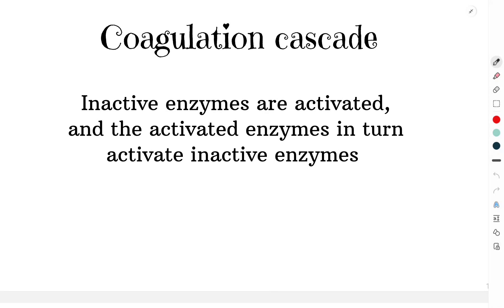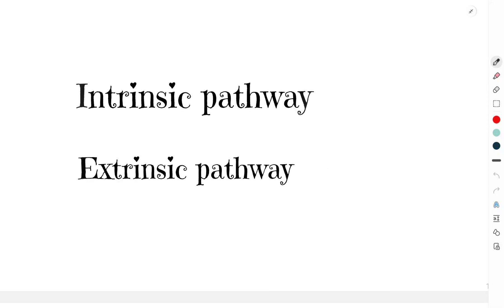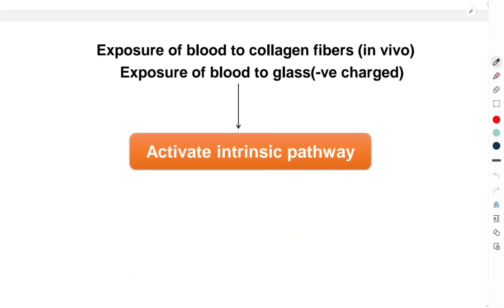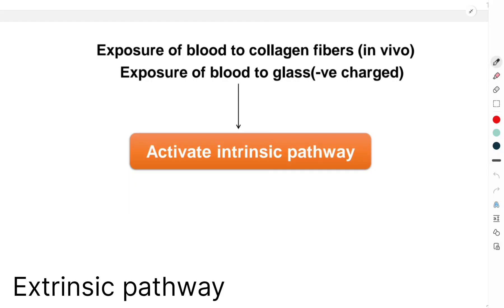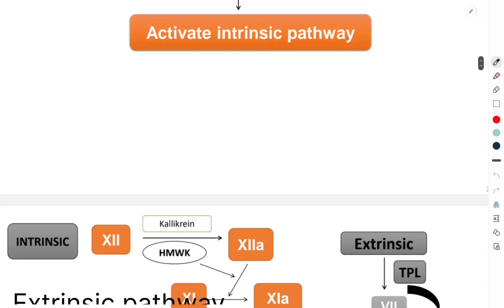There are two pathways by which the clot is formed: the intrinsic pathway and the extrinsic pathway. The intrinsic pathway is activated whenever there is exposure of blood to the underlying collagen fibers — this occurs in vivo. It can also be activated in vitro when blood is exposed to a negatively charged wettable surface like glass. The extrinsic pathway is activated whenever there is damage to the tissue.